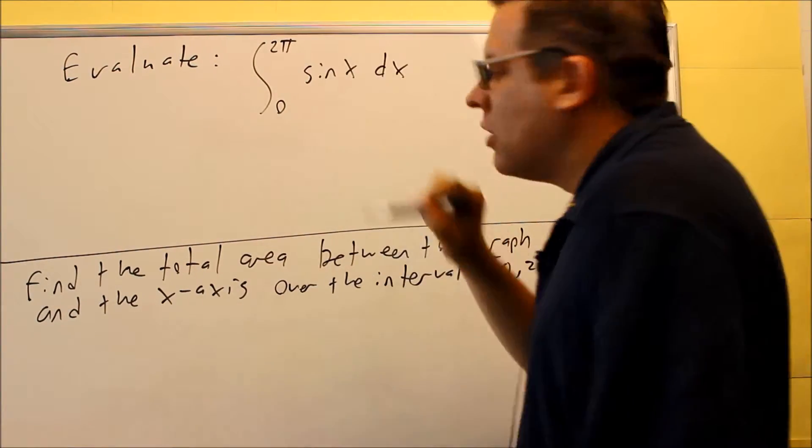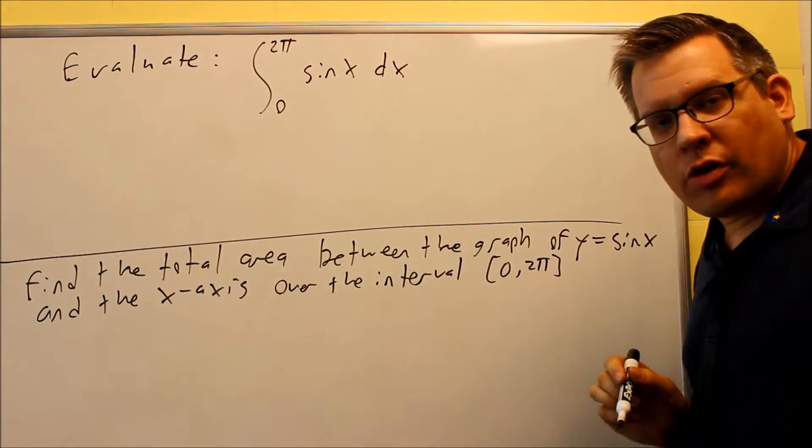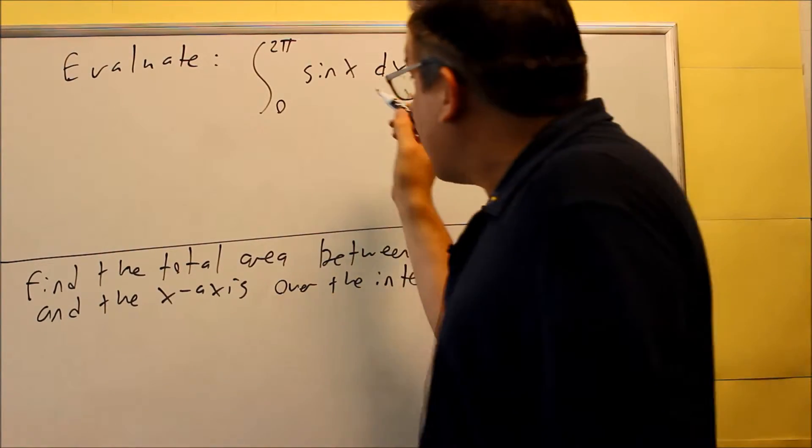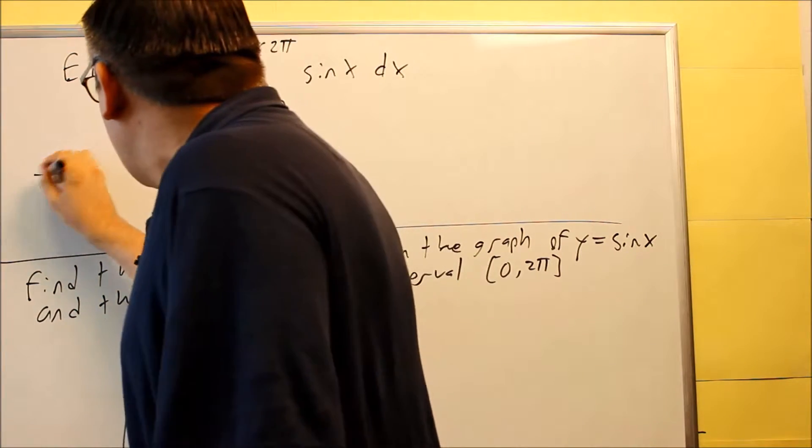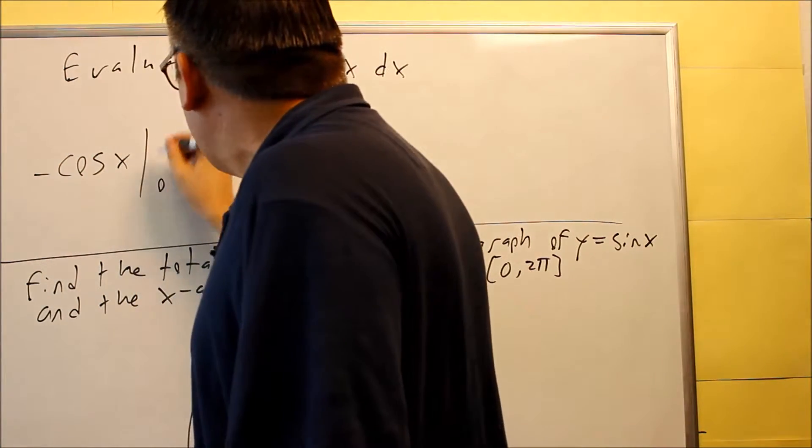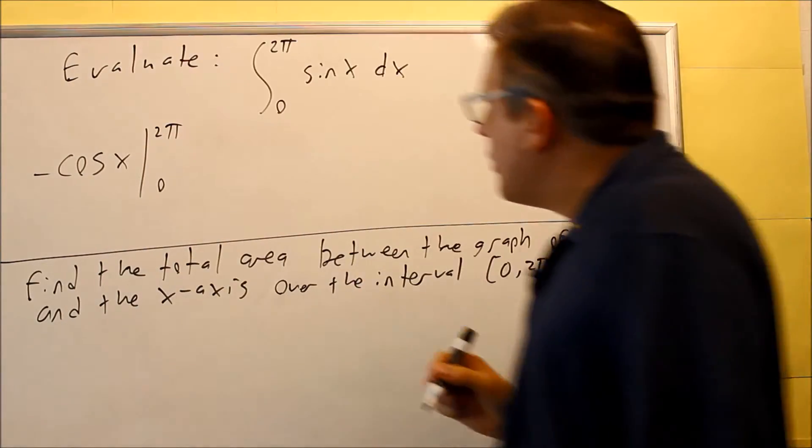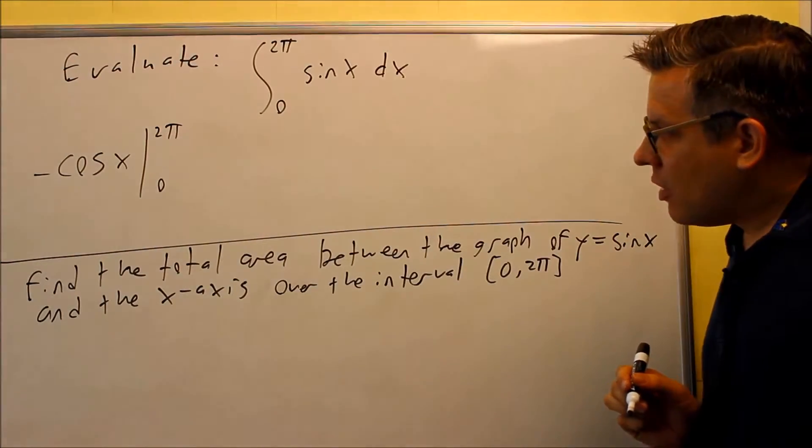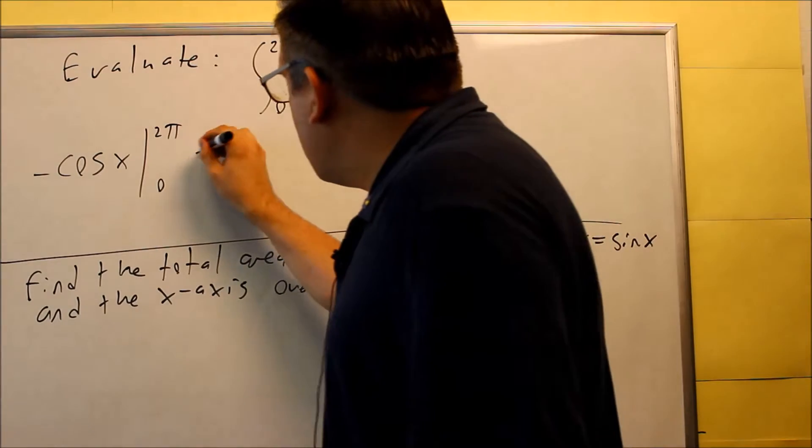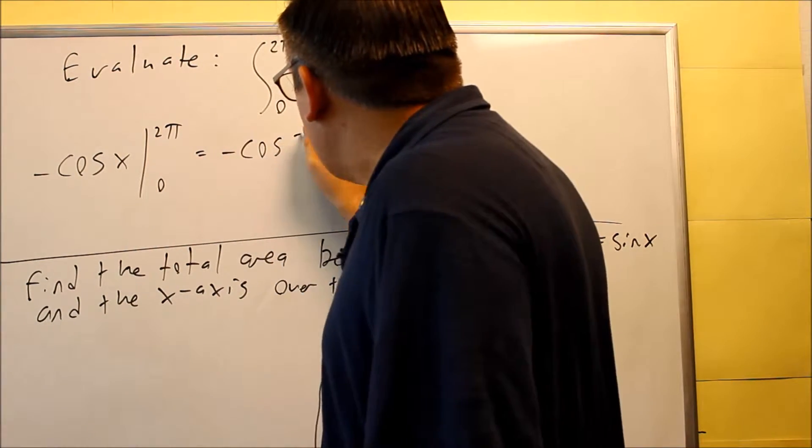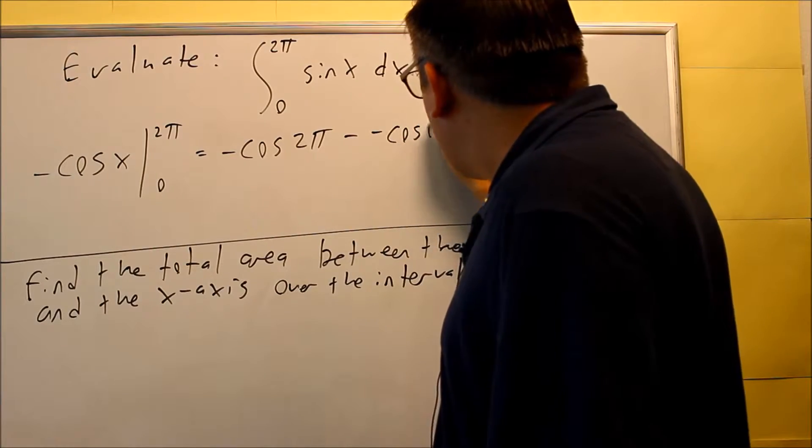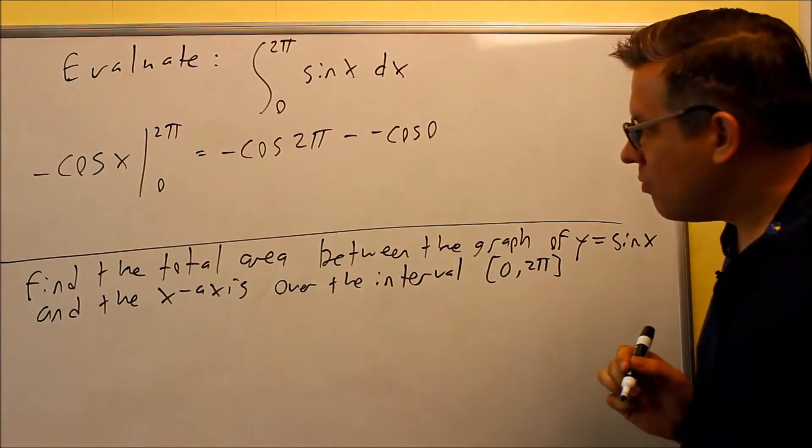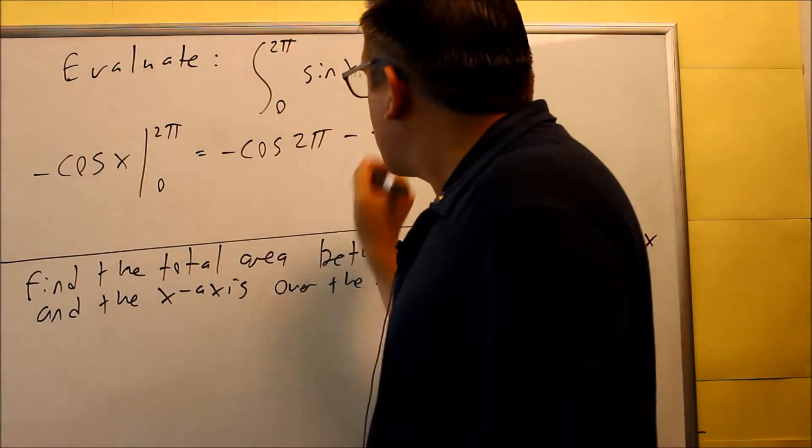Let's just do this one first. This one is our regular anti-derivatives we've already been working with. We're going to take the anti-derivative of sine, and that's going to be negative cosine, and you're going to go between 0 and 2π. You put that in, you're going to get negative cosine of 2π minus negative cosine of 0.